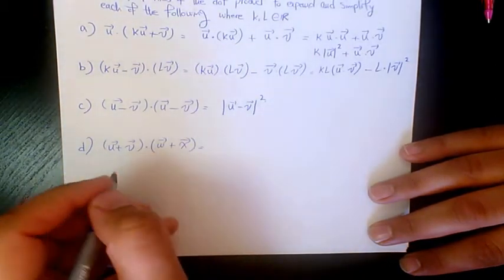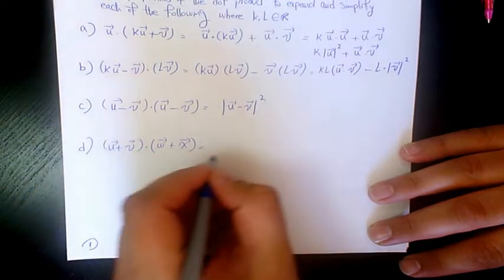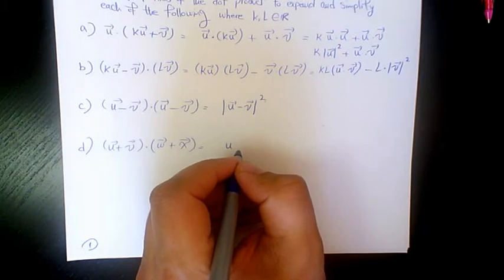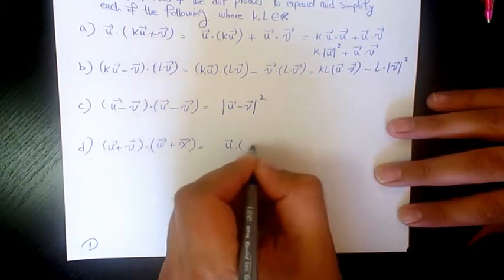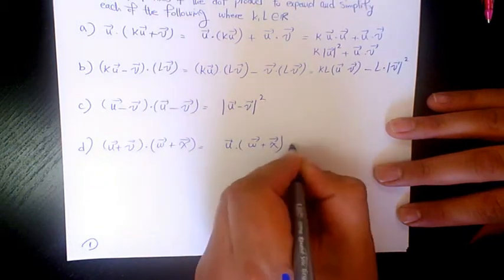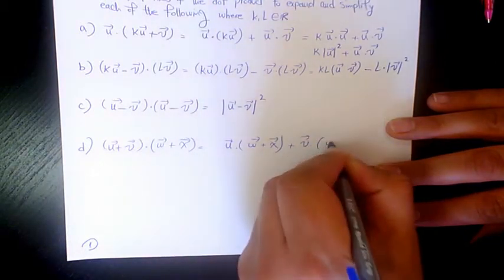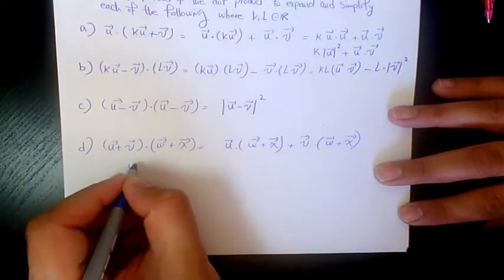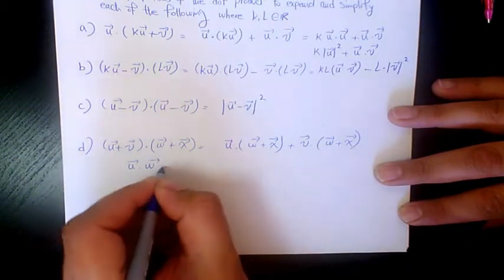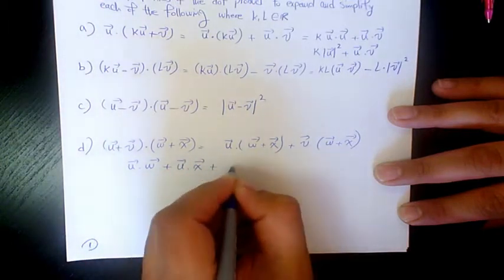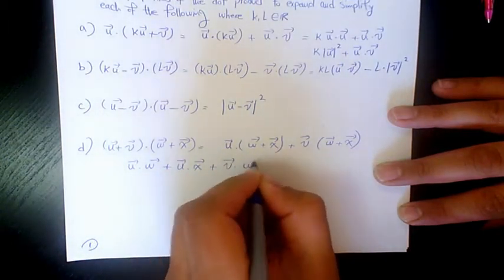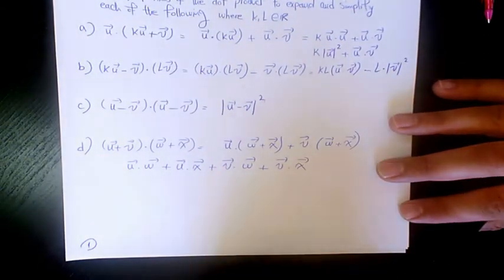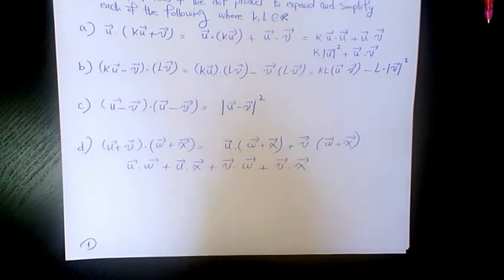Next, (u plus v) dot (w plus x). We distribute: u dot (w plus x) plus v dot (w plus x), which expands to u dot w plus u dot x plus v dot w plus v dot x. That's the full expansion.